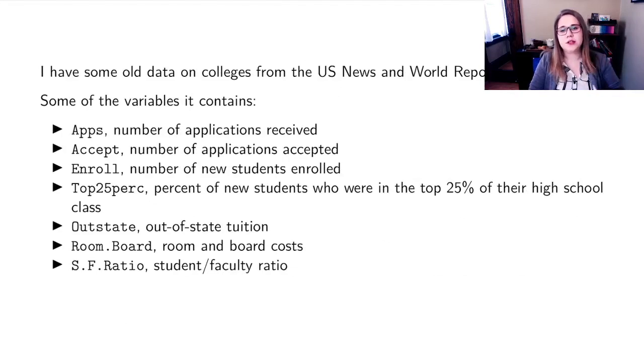I have some data on colleges from the US News and World Report. It's pretty old, from the 90s. It has a bunch of variables: the number of applications the college got, the number they accepted, the number of students who enrolled, the percent of students in the top 25 percent of their high school class, the out-of-state tuition, the room and board costs, and the student faculty ratio.